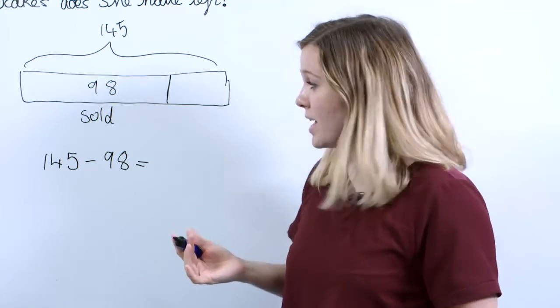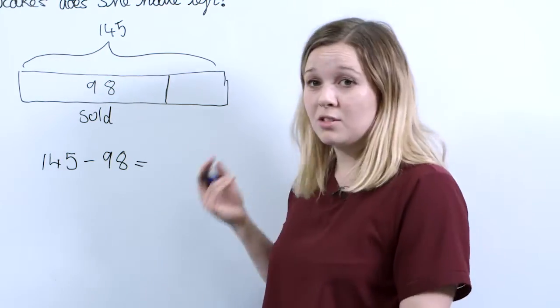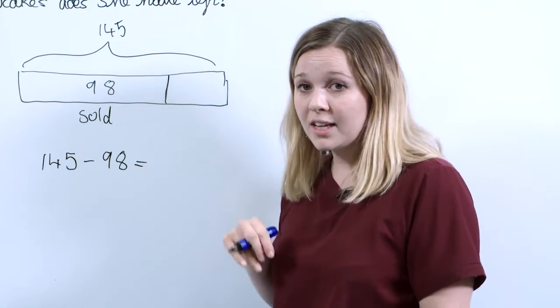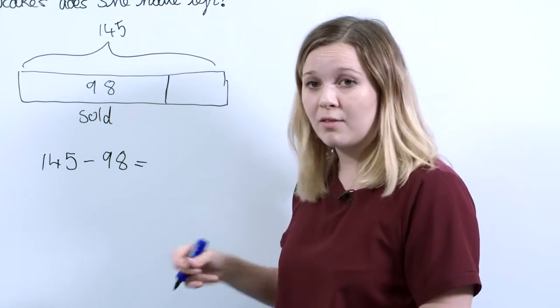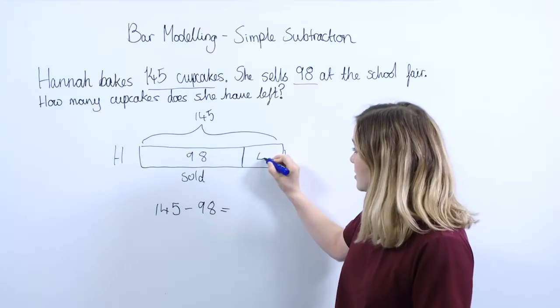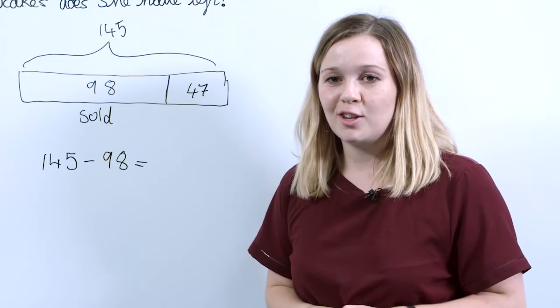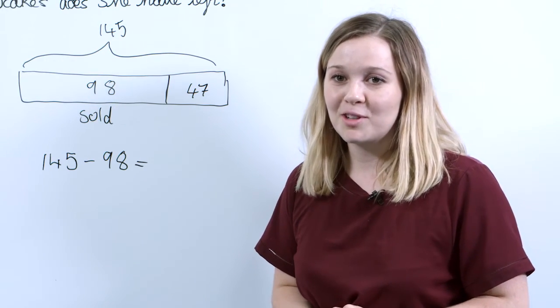Now pupils could do this in different ways. They might want to use column subtraction. I'd recommend just doing a really quick mental method, take away 100 to give you 45 and add on the other two to give you 47. So your answer here is 47 cupcakes left and that's how you can use the bar model to solve simple subtraction problems.